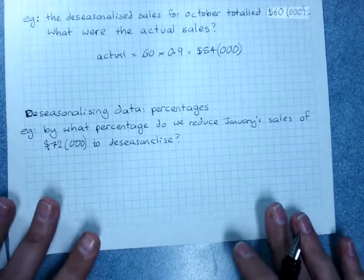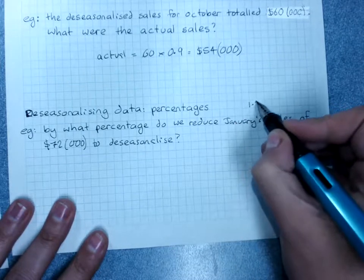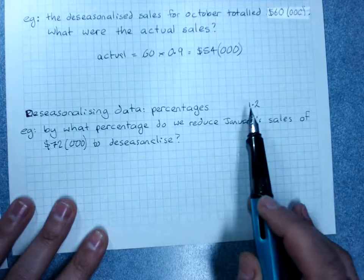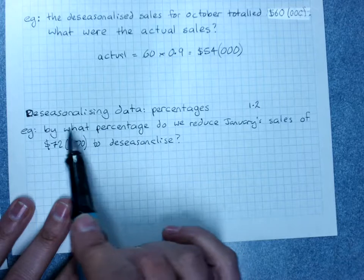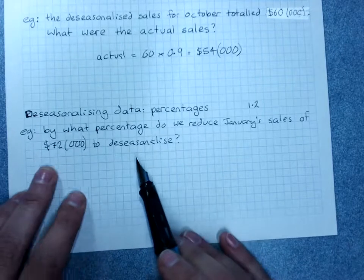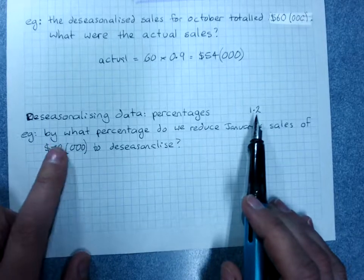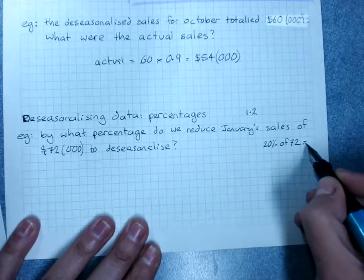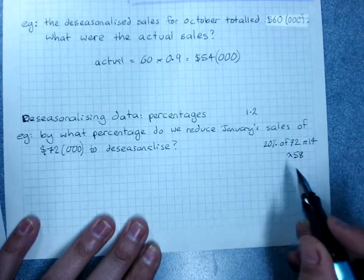Now it's just worth noting: if the seasonal index in January is 1.2, sure that means January's score of 72,000 is 20% above the mean. But it doesn't mean that we take off 20% of 72 to get back to de-seasonalized data, because this was 20% of the average, not 20% of this. If I found 20% of 72, that's about 14. If I took that off I'd get about 58, and that's wrong.